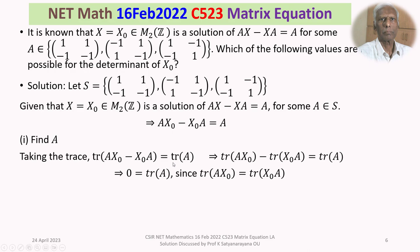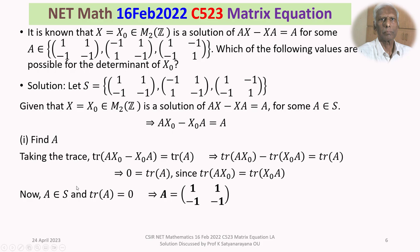We now find which A in the set S has trace equal to 0. For the first matrix, trace = 1 + (−1) = 0. For the second matrix, trace = −2, so it is not a candidate. The third matrix also fails. Therefore, trace(A) = 0 and A ∈ S implies A = [[1, 1], [−1, −1]].